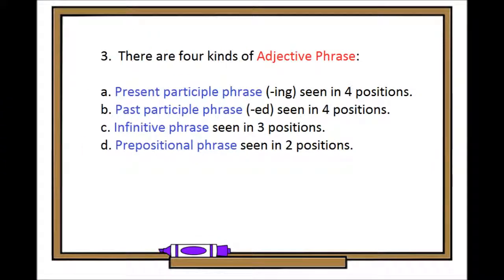There are four kinds of adjective phrase: present participle phrase (-ing) seen in four positions, past participle phrase (-ed) seen in four positions, infinitive phrase seen in three positions, and prepositional phrase seen in two positions.